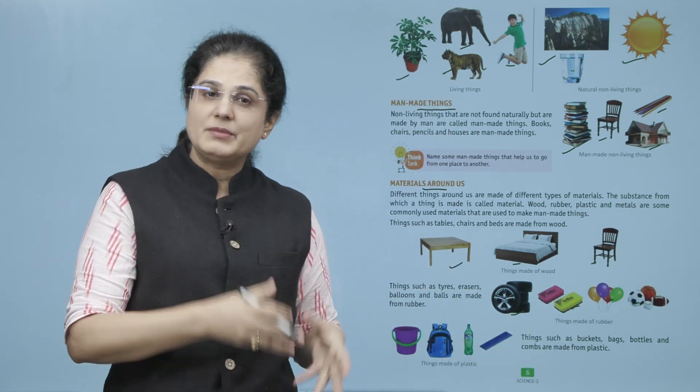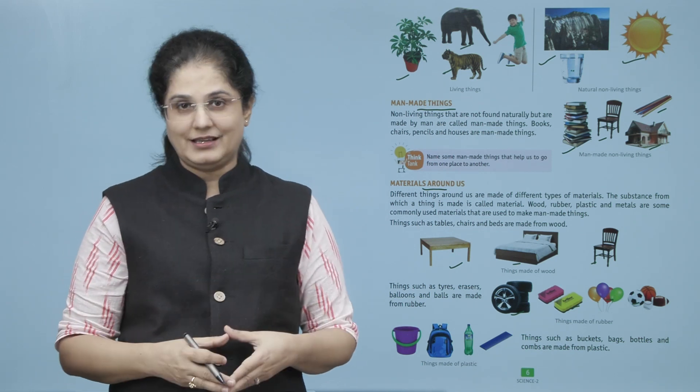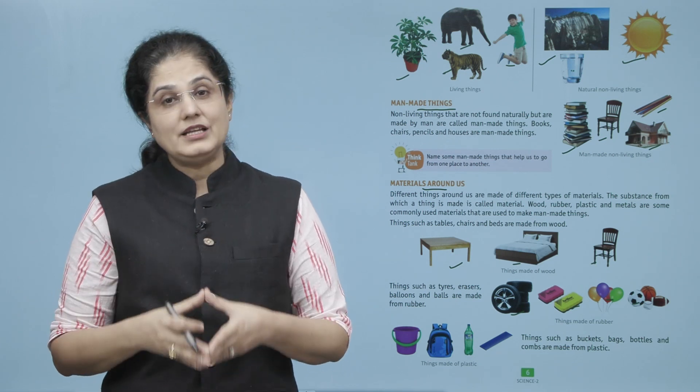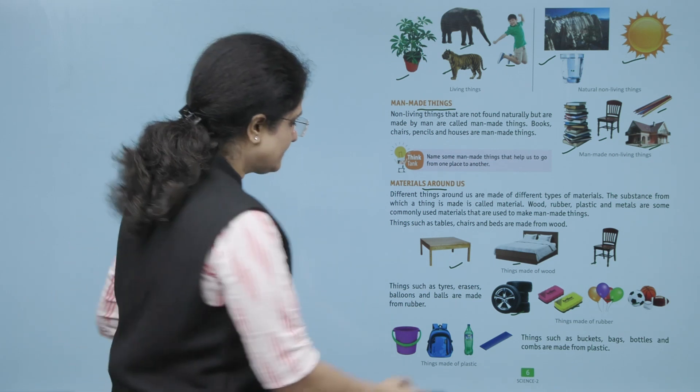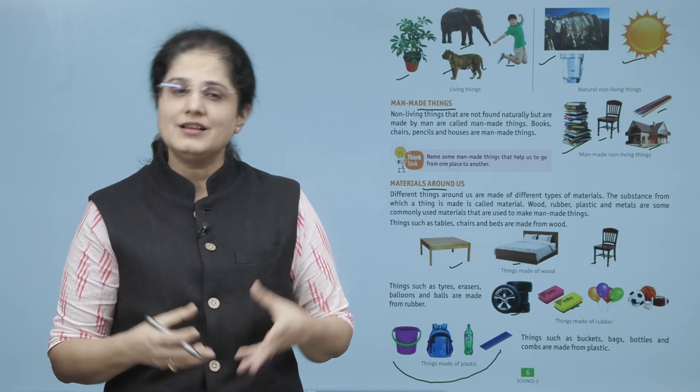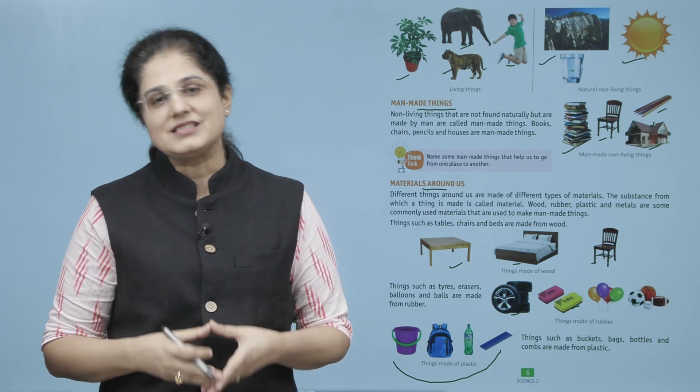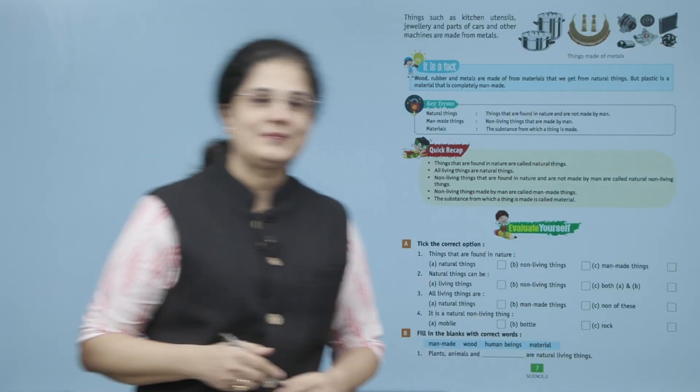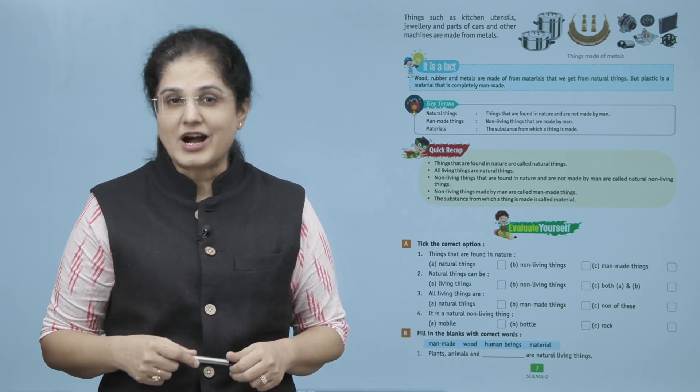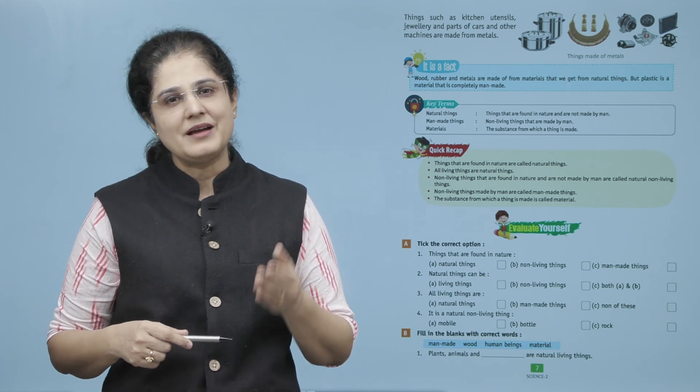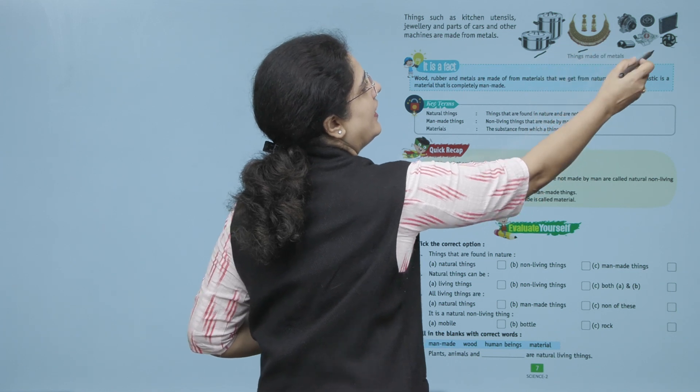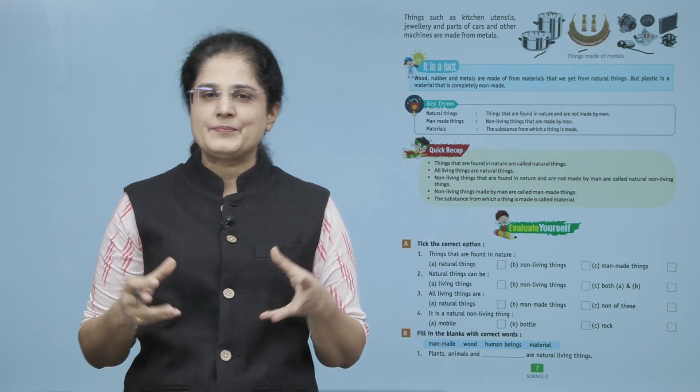Then things such as buckets, bags, bottles, and combs are made from plastic. Yeh sari wo chizhe hai jo ki jaise ki balti ho gaya, bag ho gaya, bottle ho gaya, kanghi ho gaya, yeh sab chizhe hum plastic se bantate hai. Things such as kitchen utensils, jewelry, and parts of cars and other machines are made from metals. Humare istamal mein aaye jane wale bartan ya phir jo gehne hai ya jo machine ke alag-alag purze hote hai, yeh sab metal se bantate hai.